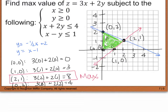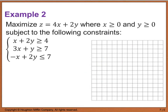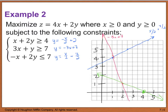If we were looking for a minimum value, our minimum value would occur at (0, 0). But in this case, it just asks for the max, so we are done. One other thing I want to caution you on: sometimes you may find that you have more than one vertex that has the same solution, and that's okay. Example 2 tells us to maximize the objective function z equals 4x plus 2y, where x and y are both greater than or equal to 0, with constraints: x plus 2y is greater than or equal to 4, 3x plus y is greater than or equal to 7, and negative x plus 2y is less than or equal to 7. I'm going to rearrange my equations so I can plot them, and we end up with a graph that looks like this.